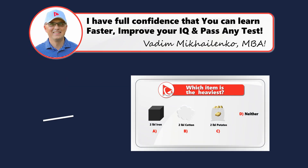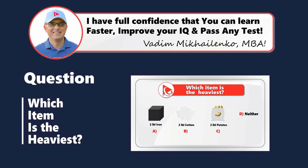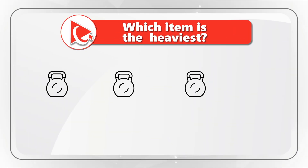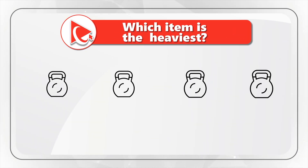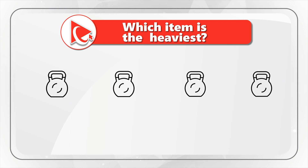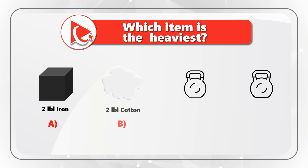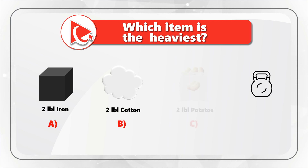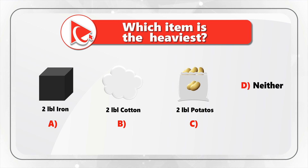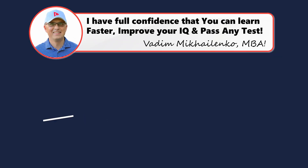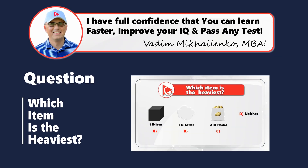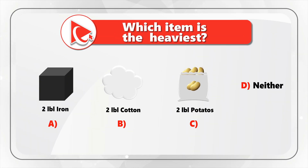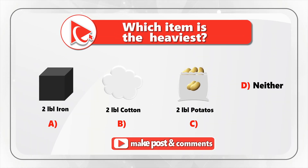Here is an absolutely brilliant and at the same time very tricky question, but I have full confidence that you will be able to solve it. You need to determine which item is the heaviest. You are presented with four possible choices: choice A, 2 lb of iron; choice B, 2 lb of cotton; choice C, 2 lb of potatoes; and last but not least, choice D, neither one. Take a close look. I am moving forward to share with you my version of the solution. If you have a better way to solve it, please make sure to post in comments.